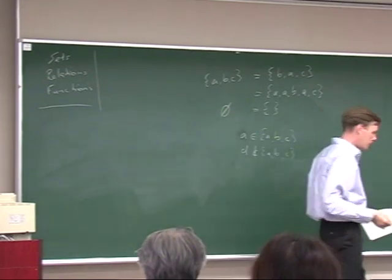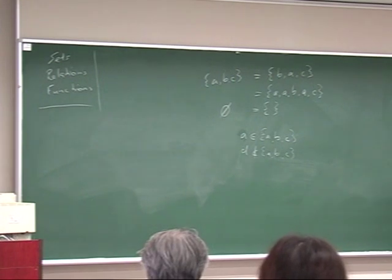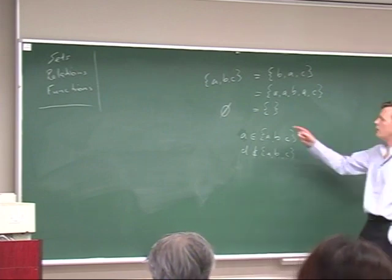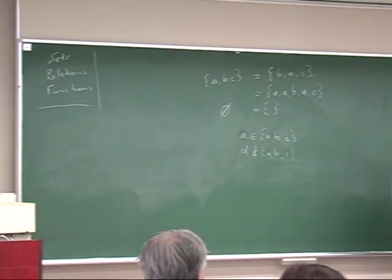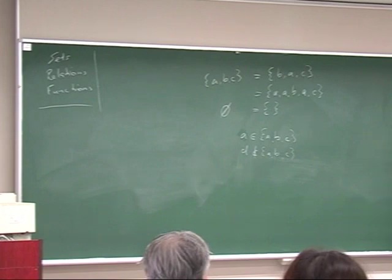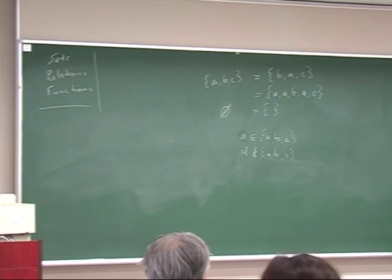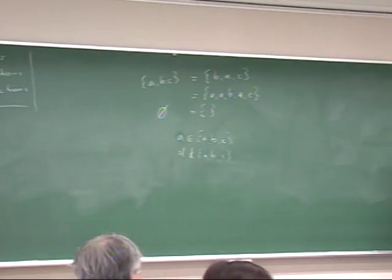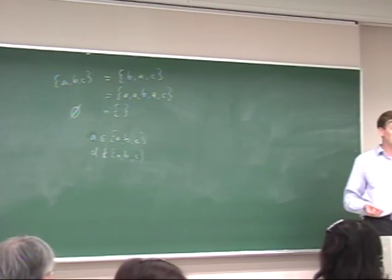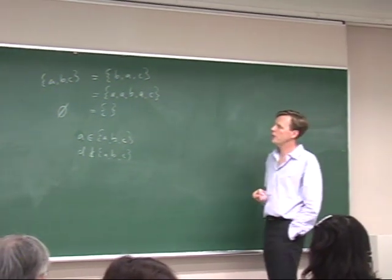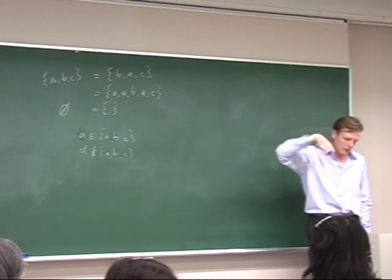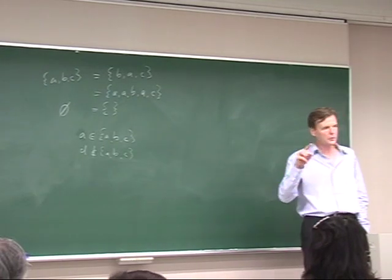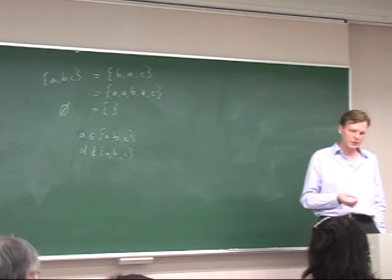We can define sets in three ways listed on the handout. For example, here I used the first method — just telling you which members are in there and which are not. In general, this isn't possible because sometimes sets are infinite, or we don't know who's in there — for example, the set of all Japanese men. So we use enumeration with dot-dot-dot notation to deal with infinity.